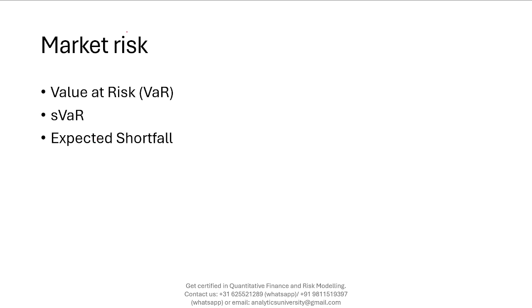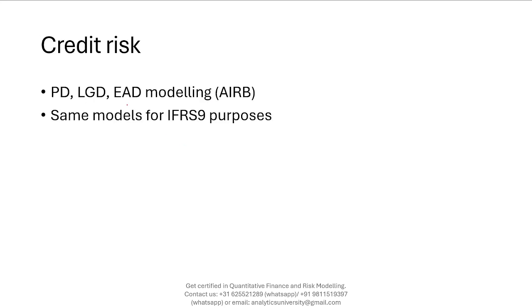If you're going to be working as a Quant in market risk, at the bare minimum you should know Value at Risk (VaR) models and Expected Shortfall models — the most popular models in market risk. If you're on the credit risk side, you must know what a PD (Probability of Default) model is, what an LGD (Loss Given Default) model is, what an EAD (Exposure at Default) model is, and how they are built for capital calculation. You should also understand how these models are used for IFRS 9 provisioning purposes.